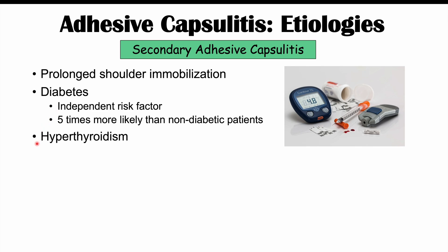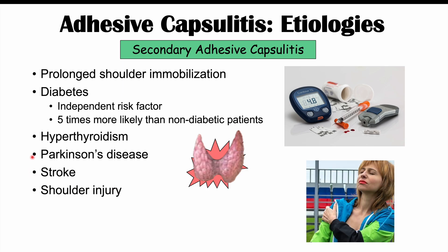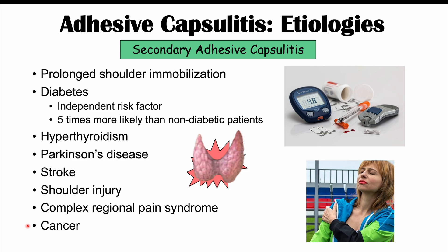Hyperthyroidism — a high-functioning thyroid — is also an associated cause. Parkinson's disease is another potential underlying cause. Having a stroke is an important associated factor, as is a shoulder injury, since all three can lead to reduced shoulder mobility, increasing the likelihood of this condition. Complex regional pain syndrome and cancer can also be underlying causes of secondary adhesive capsulitis.